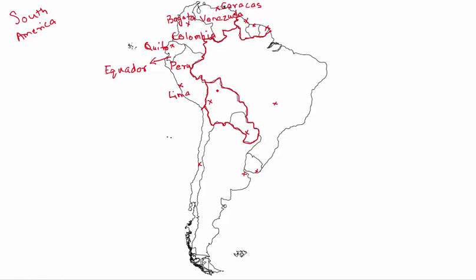Next we take up the two landlocked countries. The first landlocked country, larger in shape, is Bolivia. It's also a very interesting study to read about the history of Bolivia, which was founded by Simón Bolívar — a huge figure, sort of the father of the nation of Bolivia. The second country in this landlocked area is Paraguay, and Paraguay's capital is Asunción.